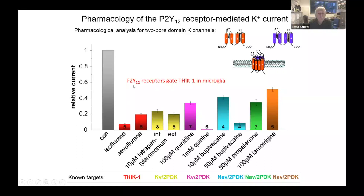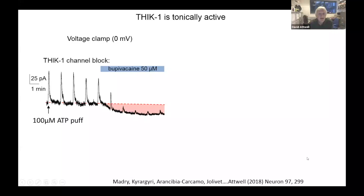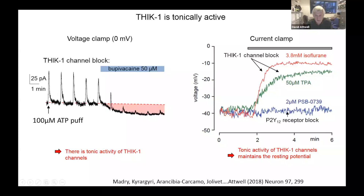THIK1 channels aren't just gated by ADP — they're tonically active. If you repeatedly puff ATP you get an outward current, and when you block the channel with bupivacaine, as well as suppressing the response to the puff, you also get a change of baseline current. The membrane potential of microglia is normally around minus 40 millivolts. Blocking these channels with TPA or isoflurane depolarizes the cell to about minus 10 millivolts, whereas blocking P2Y12 has no effect. It's this tonic activity of THIK1 that maintains resting potential.